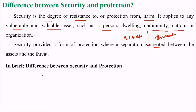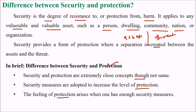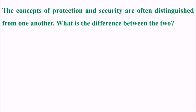In brief, the difference between security and protection: they are extremely close concepts but they are not the same. Security measures are adopted to increase the level of protection, and the feeling of protection arises when you have enough security measures. Security is a type of protection against external threats, and the concepts are often distinguished from one another.